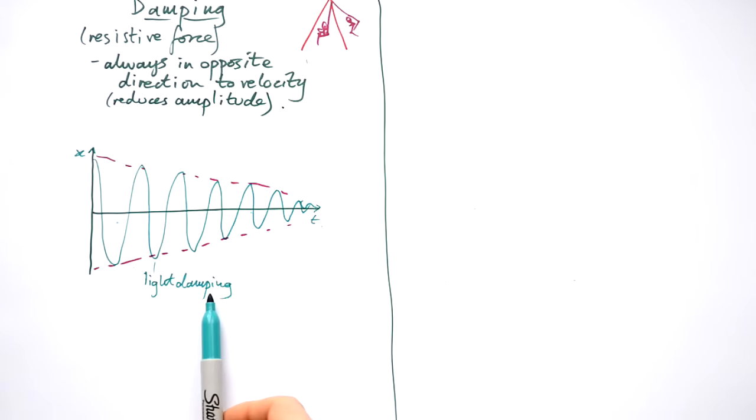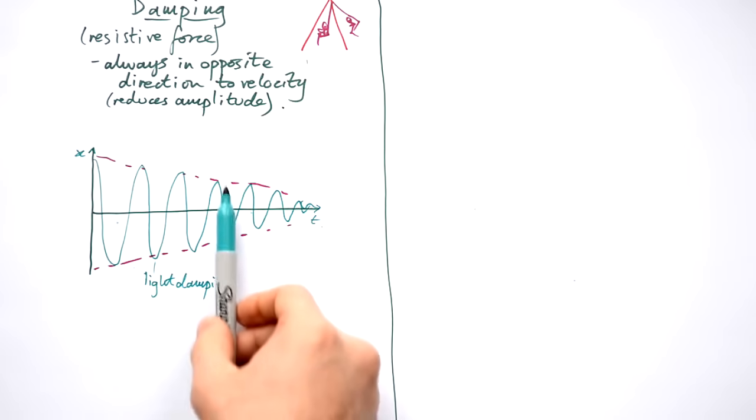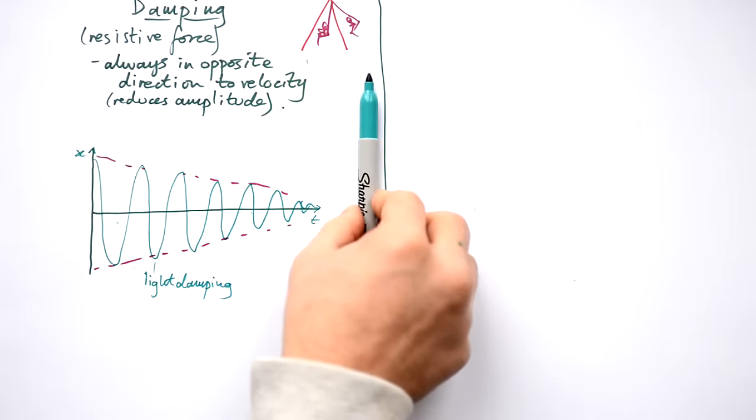Light damping is going to affect the time period ever so slightly but we pretend that it doesn't really. That it's just enough force to keep the time period the same but it is going to reduce the amplitude. So eventually Seren is going to come to a standstill like that.